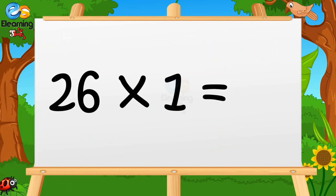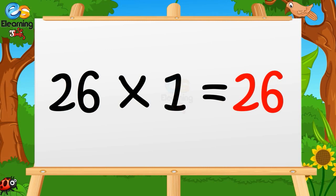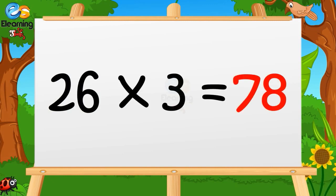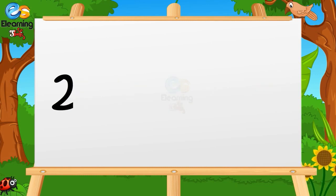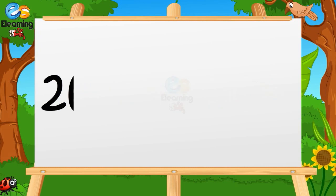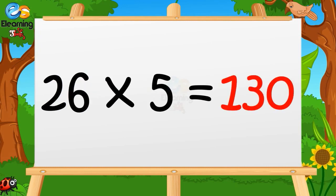26 ones are 26. 26 twos are 52. 26 threes are 78. 26 fours are 104. 26 fives are 130.